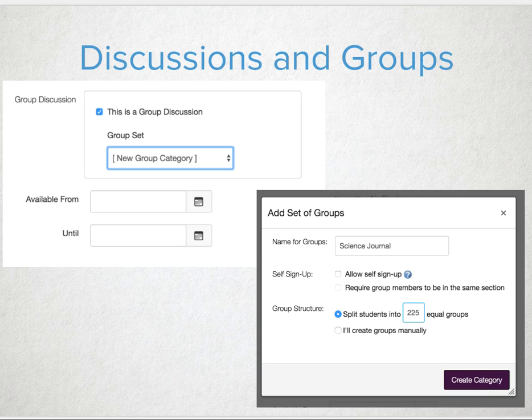The first step to this modified use and trick with discussions is to create a group for the personal journals. Then within that group, you'll want to create more groups than students enrolled in the course. That way, if students are enrolled after the start date or creation of the journal, you can easily add them to their own personal group.